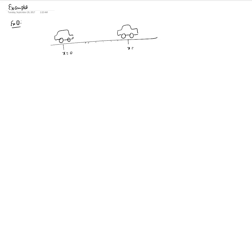We are given its initial position x₀ = 0 and its final position x = 10 meters. Its initial velocity v₀ = 0 and its final velocity is 10 meters per second. We want to find the acceleration, assuming it is uniform — and clearly the car is accelerating since velocity increased from zero to 10 m/s.